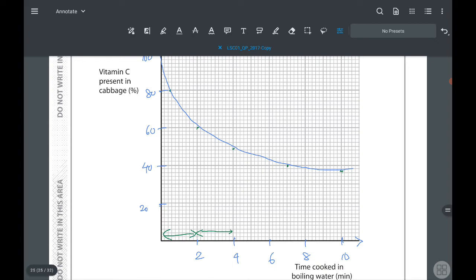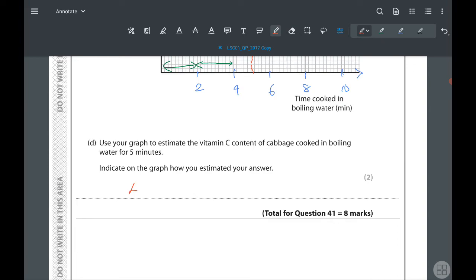Next question: use your graph to estimate the vitamin C content of cabbage cooked in boiling water for 5 minutes. We will use a dotted line for this one. At 5 minutes you can draw a dotted line upwards. My graph is not perfect, but make sure when you draw, use the correct equipment like a ruler and pencil so you can get a better reading. Here your answer would be around this value, can be 45 or 46. I would say 45.